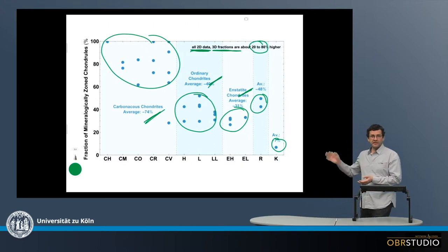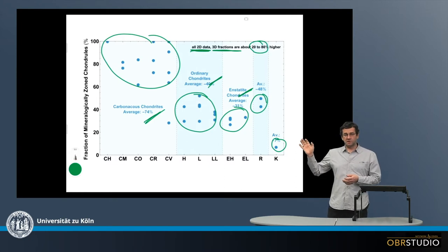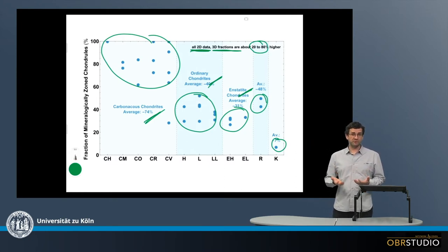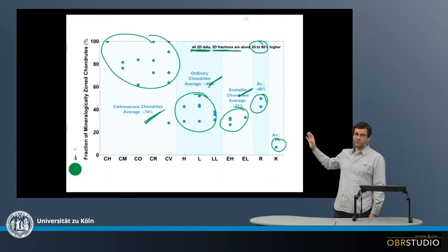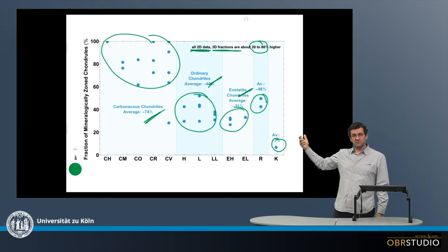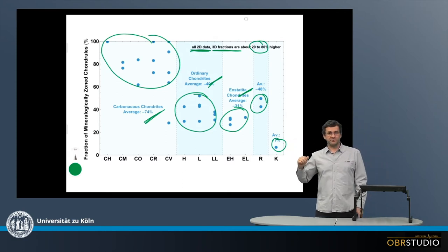So chondrules are open systems. Studying mineralogically zoned chondrules will give us clues and constraints for chondrule formation processes but also the reservoir in which these chondrules form. Therefore it is quite important to know about these zoned chondrules and about their fractions.